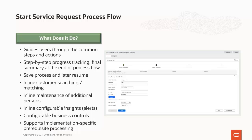A saved process flow can then be resumed at a later stage to continue processing the start service request. Inline customer searching and matching allows a call center agent to correctly identify the person requesting the start service to see if they already exist in the solution. If not, the person will be automatically created as the call center agent progresses through the process flow.